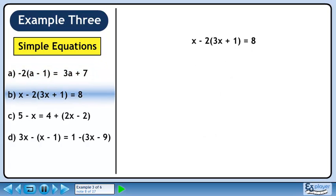In part b, we will solve another equation involving brackets. Multiply minus 2 through the brackets giving us x minus 6x minus 2 equals 8.